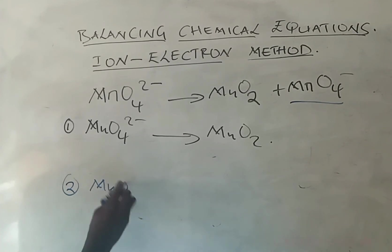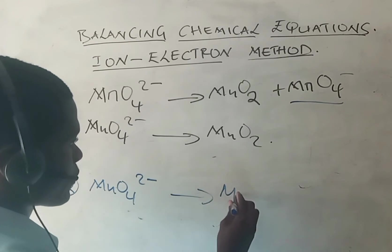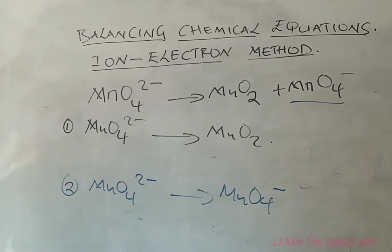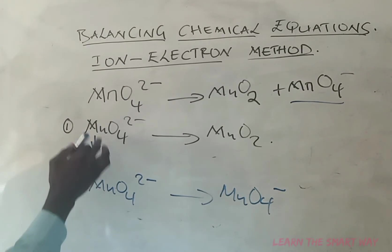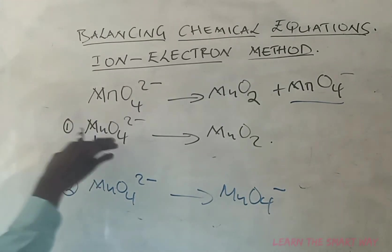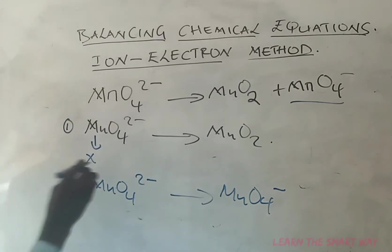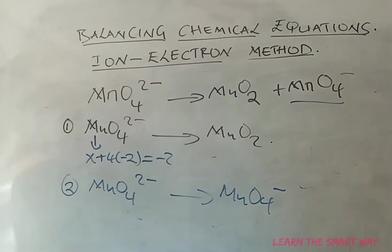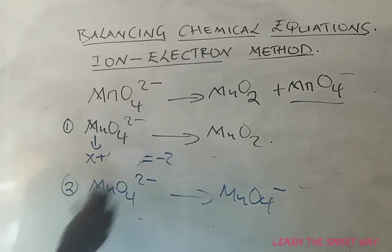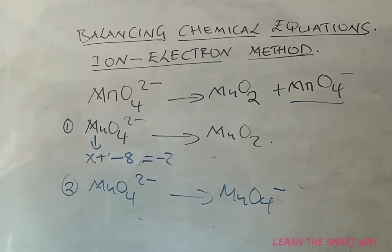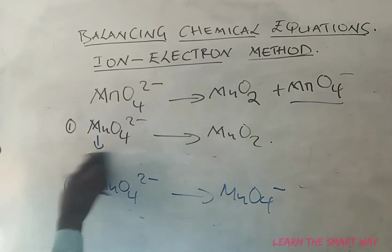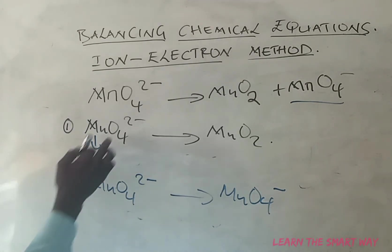To identify oxidation and reduction, we determine the oxidation state of manganese. In MnO₄²⁻: oxygen is −2, four oxygens give −8, so x − 8 = −2, meaning Mn is +6. In MnO₂: two oxygens give −4, overall charge is zero, so x = +4. In MnO₄⁻: four oxygens give −8, overall charge is −1, so x − 8 = −1, meaning Mn is +7.